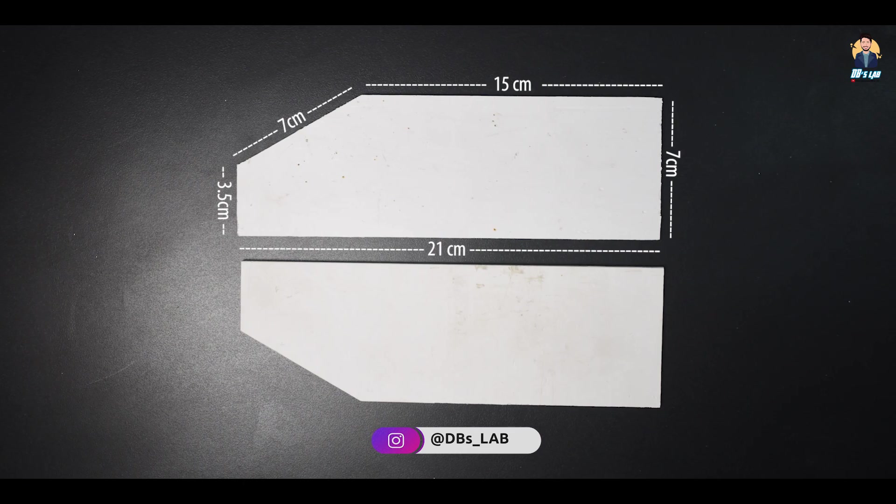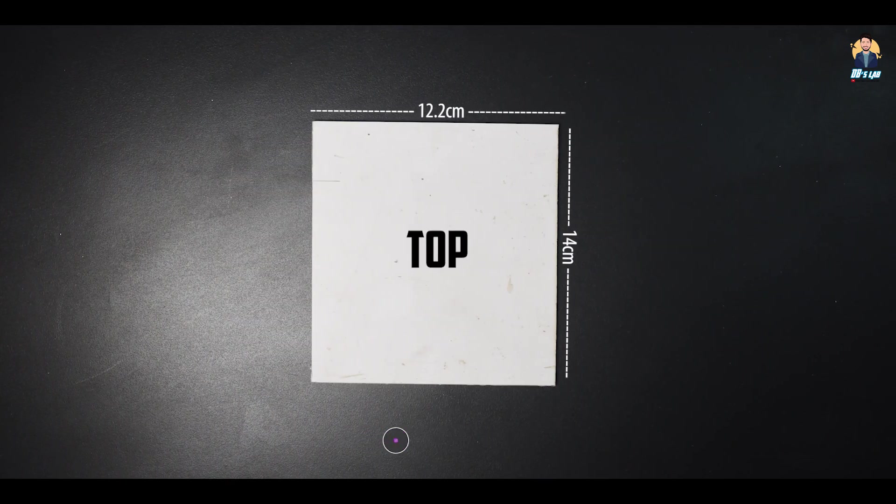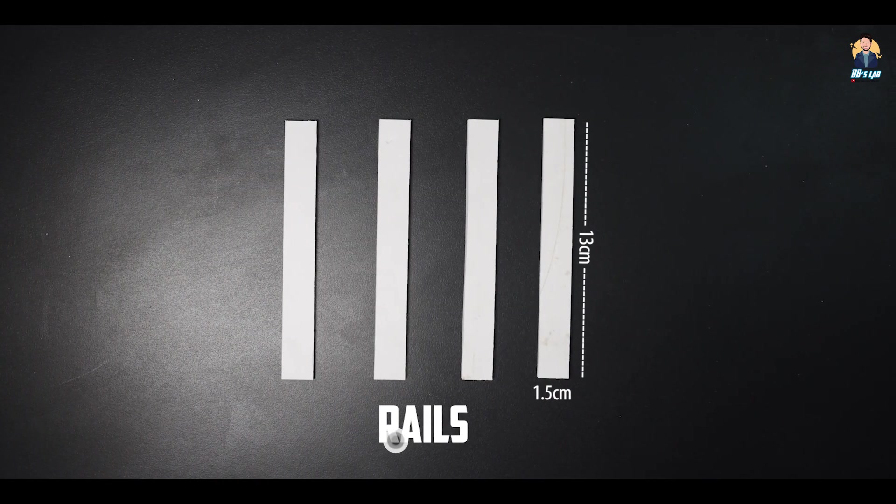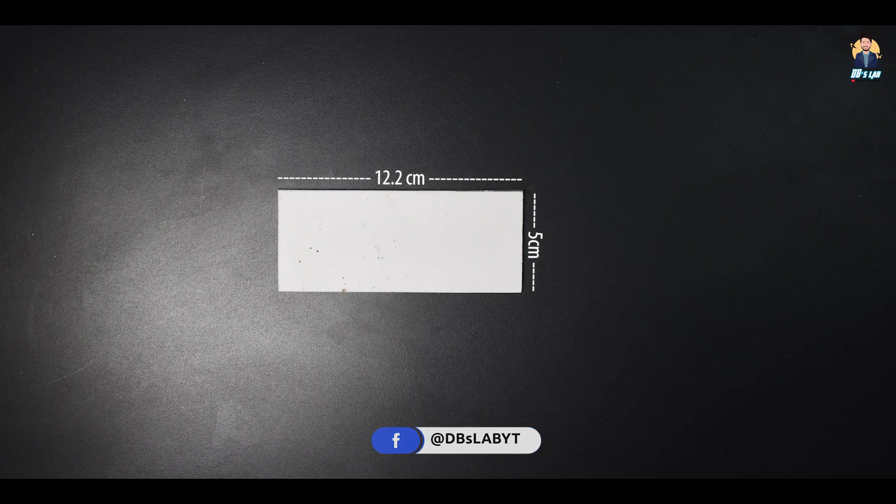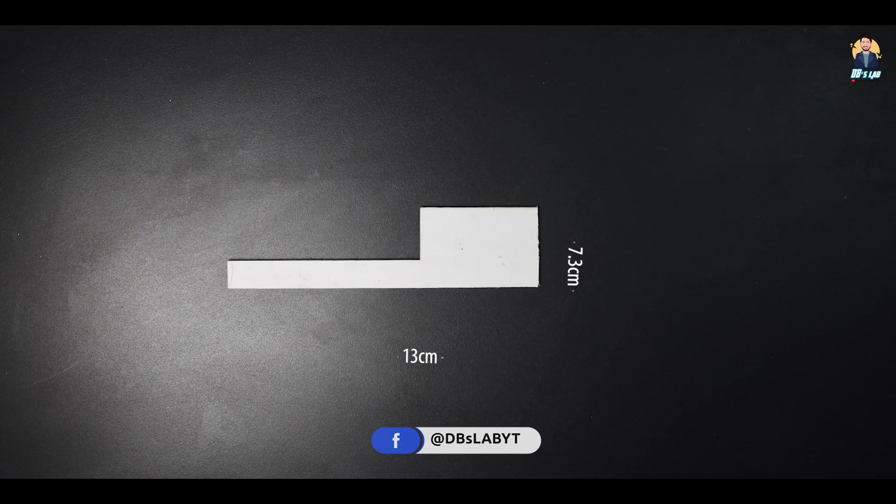A bottom, two sides, a top, four rails, a compartment wall, a partition wall, and a back.